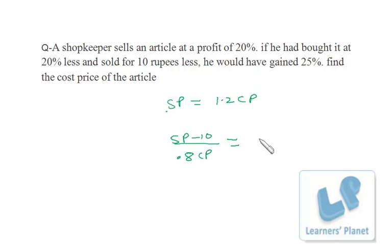That means you can write it as 1.25 or 5 by 4. 25% is 5 by 4, or you can write down 1.25.